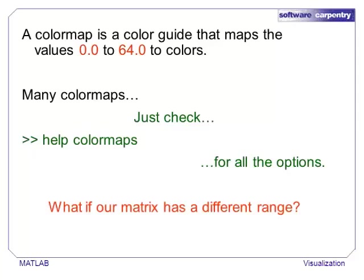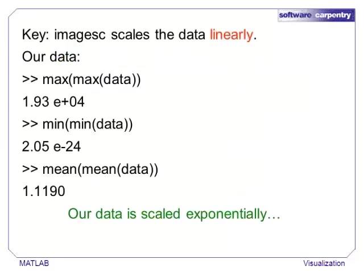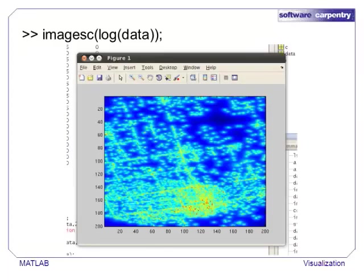An important point about image is that it expects all the values to be between 0 and 64. If the data has a different range, then it is truncated to the range 0 to 64. It is usually better to use imagesc, which rescales the values of the matrix to fit in the range 0 to 64, which ensures that the entire color map is used. Unfortunately, we still do not see a clear image in this data. The reason is that imagesc scales data linearly between the highest and lowest points. Our data follows an exponential distribution, which means that the largest values are a great deal larger than the average value.